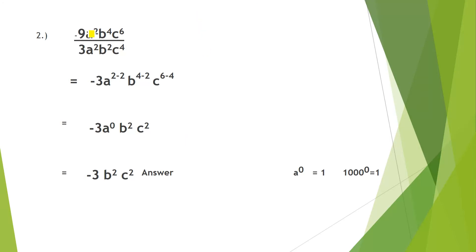The next question is: -9a²b⁴c⁶ divided by 3a²b²c⁴. First simplify the numbers: 9 divided by 3 equals 3, and we keep the negative sign, so we have minus 3. Then write down the bases a, b, and c once, with their numerator exponents: a², b⁴, and c⁶.